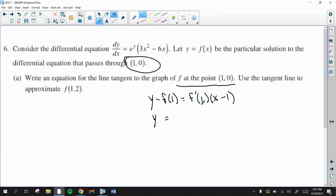f prime of 1 is the derivative at 1, and the derivative is right here, dy/dx. We have x's and y's in the derivative, so we're just going to use both x equals 1 and y equals 0.